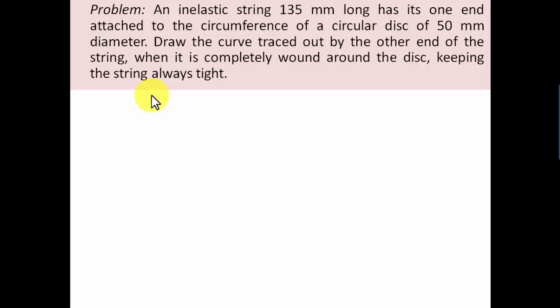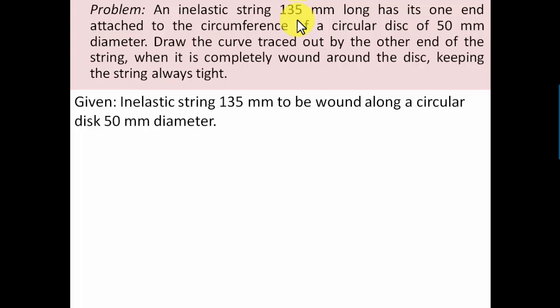We have an inelastic string 135 millimeters long to be wound around a circular disc of 50 mm diameter. Let's work out the circumference of this disc. It's going to work out as 157.07 millimeters, we can take this as approximately 157 millimeters.